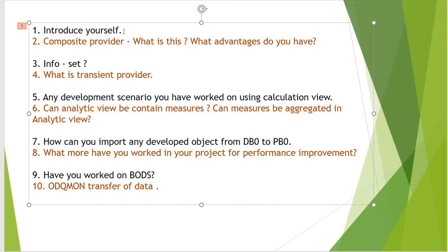The second question is about the Composite Provider — what it is and what advantages it offers. This question comes from SAP HANA. You need to show the advantages it has over the multi-provider or InfoSite, because in earlier versions we used multi-provider or InfoSite for reporting purposes, and now we are using the Composite Provider. You need to explain all these things.